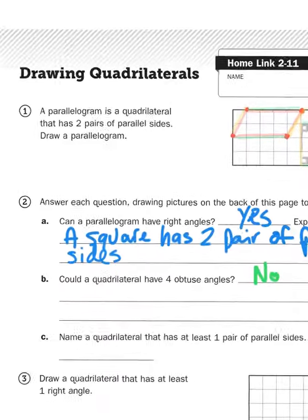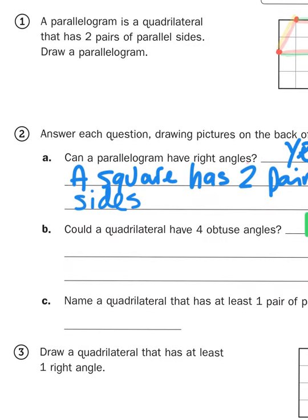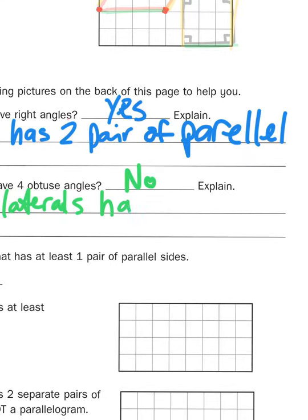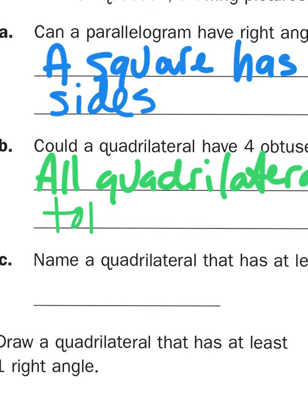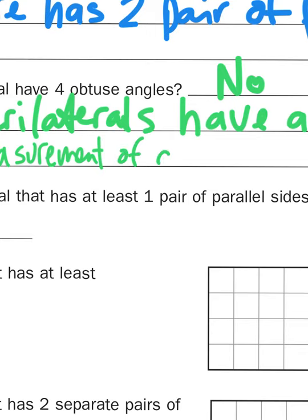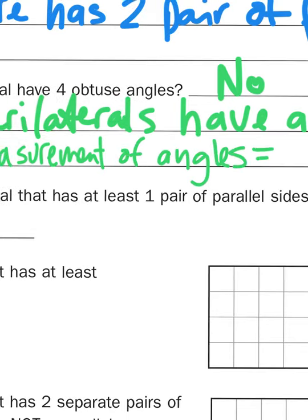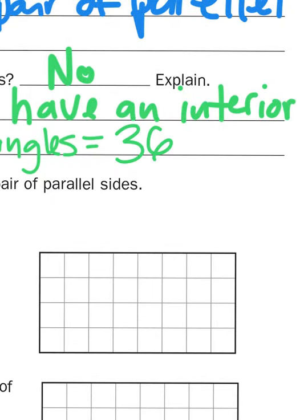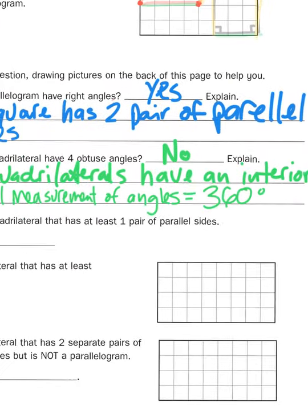But here's another fact you may or may not know about quadrilaterals. It can't have four obtuse angles because of this. All quadrilaterals have an interior, that's the inside, total measurement of angles equaling 360 degrees.